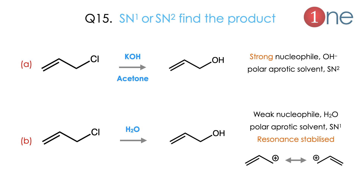Next: finding the product by changing the solvent. Reactions A and B differ only in solvent — KOH in water versus water alone. A strong base favors SN2 reaction where Cl is replaced by OH⁻ via backside attack. A weak base like water normally leads to SN1 reaction. There is also a chance for SN1 because the intermediate cation can be stabilized by resonance. You should determine whether SN1 or SN2 occurs based on base strength and cation stability.